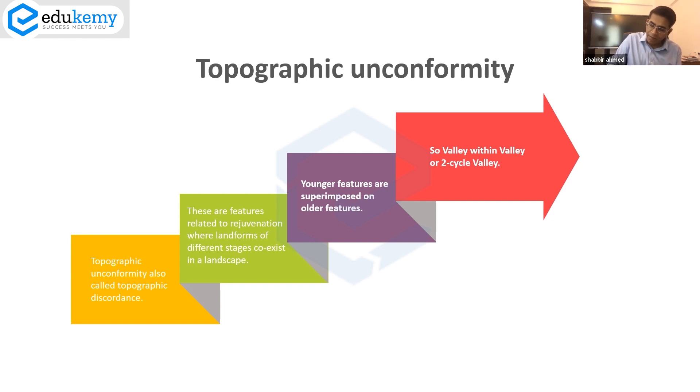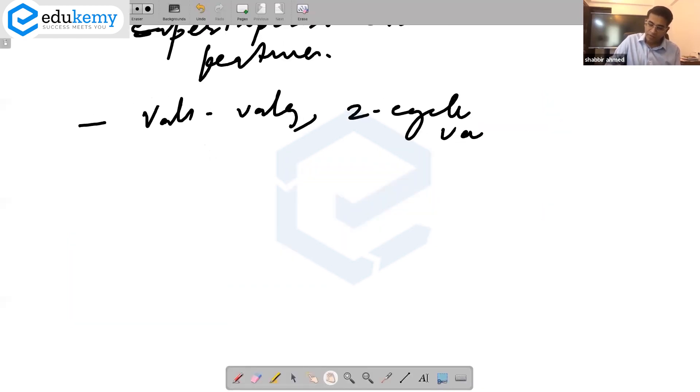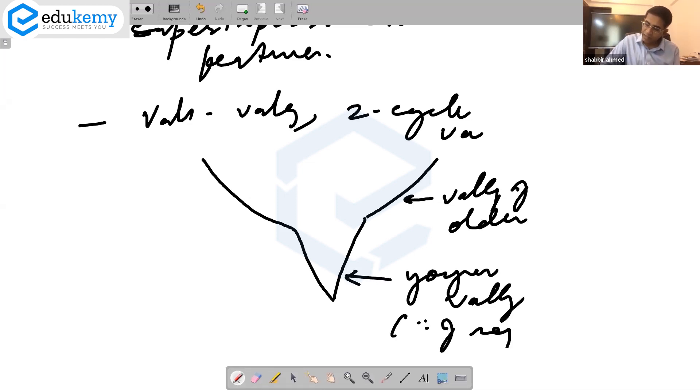Valley within valleys, we also call these two-cycle valleys. This probably was the valley of an old river because of rejuvenation. Now we have a young valley here. This is because of rejuvenation. This was the original valley.